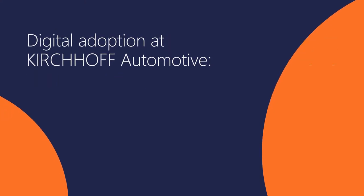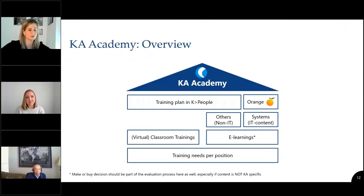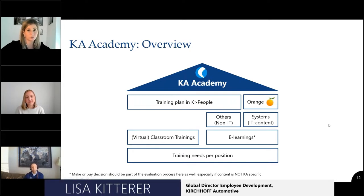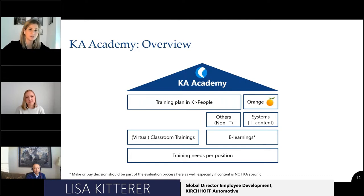The project we want to present today is what we internally call the KA Academy framework. When I pitched this idea to our global board in 2018, I said I want to make sure we address for each functional area what the training needs are per position specific to that area, and then make a decision about what we need — like when we already have trainings in place. There was stuff in place, but we never had e-learnings.